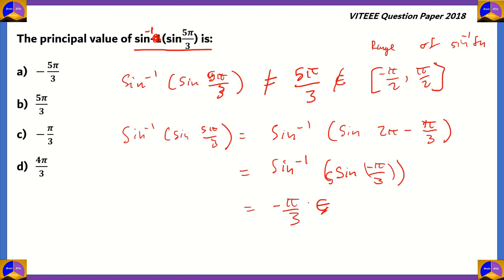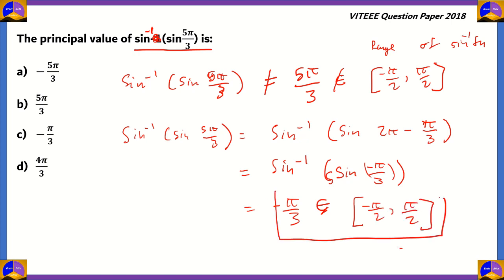So sin⁻¹(sin(-π/3)) gives -π/3 as the principal value. This time -π/3 does belong to the range of sin⁻¹, which is [-π/2, π/2]. Therefore the correct principal value of sin⁻¹(sin(5π/3)) is -π/3, making option C correct. We must align the principal value to the range of the inverse function.